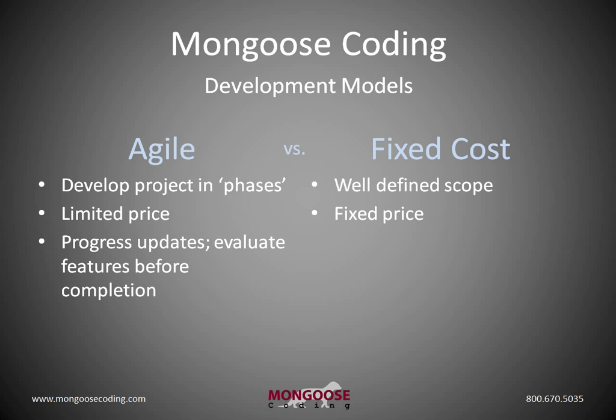Like the scope, the cost is completely determined before starting a fixed cost project. But for an Agile project, the cost is partially determined before starting and partially determined during development — it's affected by the feedback and decisions made during the progress updates and the prototyping phases.